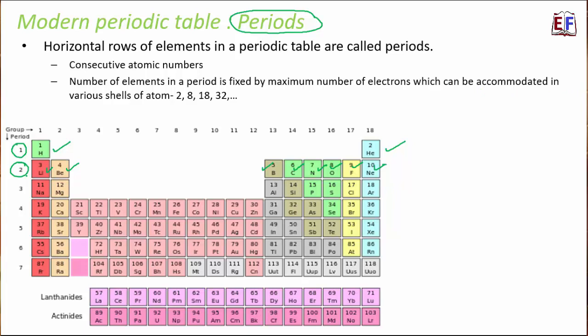Every period has a fixed number of elements. The first period has two elements (hydrogen and helium), the second period has eight (lithium to neon), the third period also has eight, the fourth and fifth periods each have 18 elements. The question is: where do these numbers — 2, 8, 18, and so on — come from?